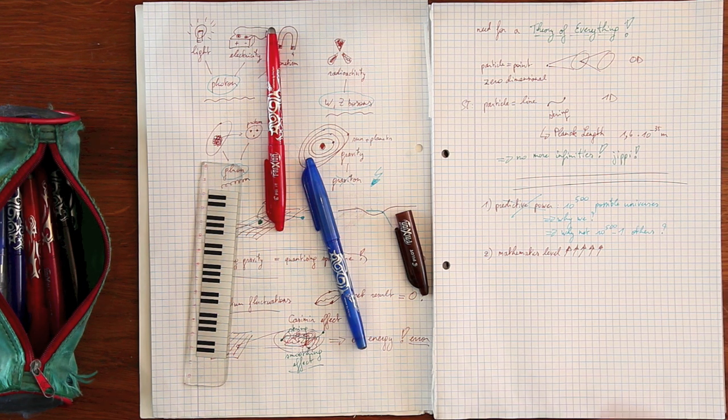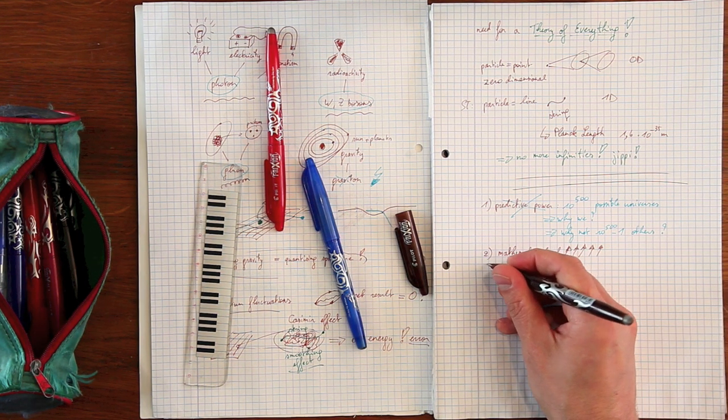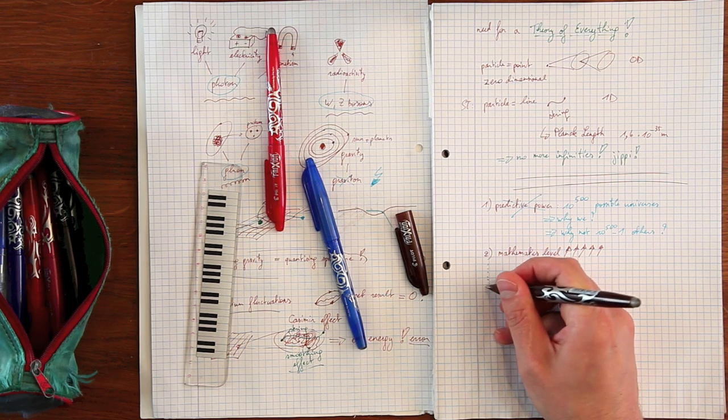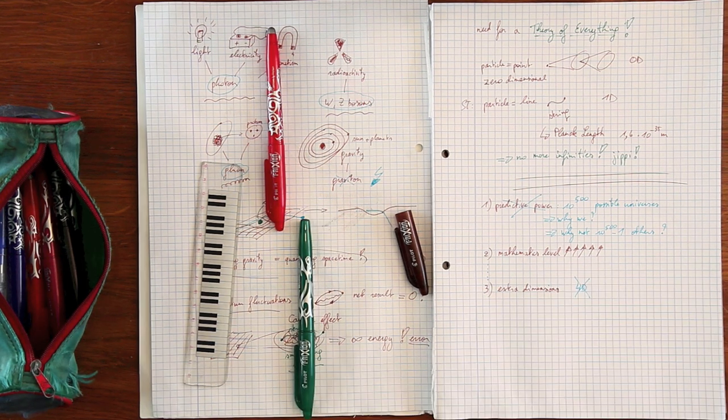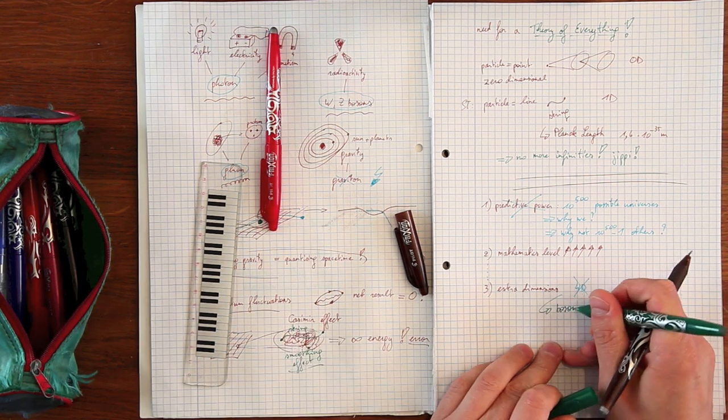Several other problems exist, minor and less minor, but the most clear one is the need for extra dimensions. String theory simply won't work in 4 dimensions. The problem sits in the boson.